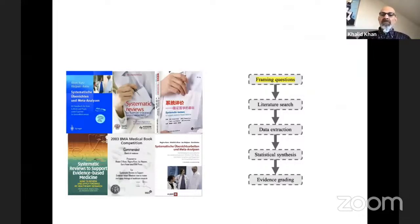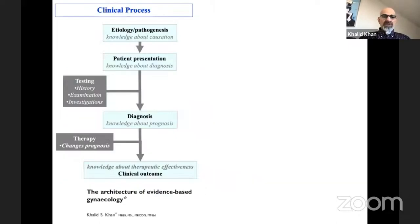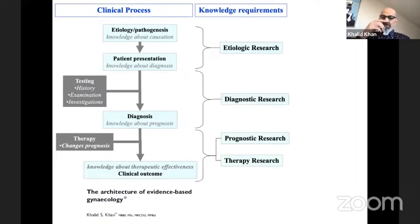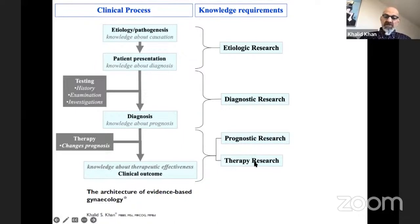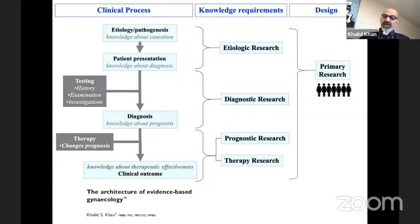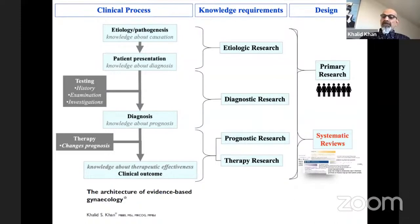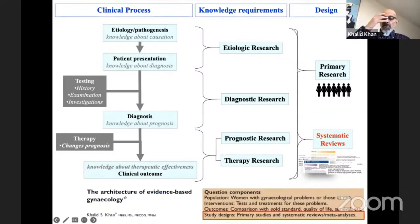We now return to the five steps of systematic reviews. The first step is framing the question. With respect to the clinical process, we go through all the different phases starting from understanding etiology to making a diagnosis. Clinical trials typically relate to therapy research, which attempts to create or evaluate interventions that will improve the prognosis of patients. We can undertake systematic reviews of trials, combining the data existing in published primary studies, using this structure for framing the research question.